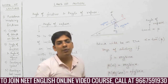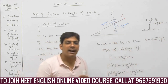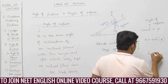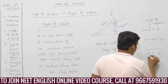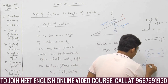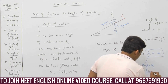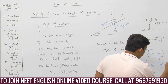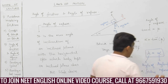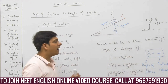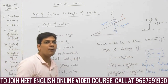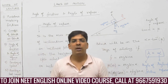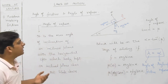Surprisingly, we got the same formula for both angle of friction and angle of repose. So angle of friction equals angle of repose. We got the same formula for angle of friction as well as angle of repose. Kindly note down this concept, dear students.